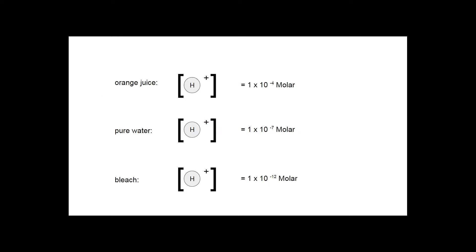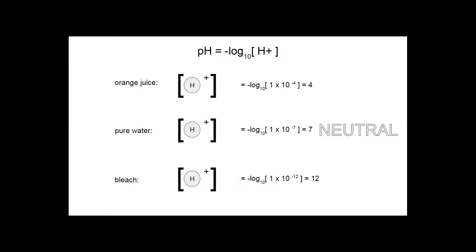It can get pretty messy looking at these numbers, and this is where pH comes into play. The hydrogen ion concentration of a solution is expressed in terms of pH, and pH is calculated as the negative log of a solution's hydrogen ion concentration. When we plug the values for orange juice, pure water, and bleach into this equation, we get a pH of 4, 7, and 12 respectively. The 7 for pure water is the neutral value. Orange juice has a value below pure water, so it has a higher concentration of hydrogen ion and is acidic. Bleach, on the other hand, has a value above pure water and is basic.